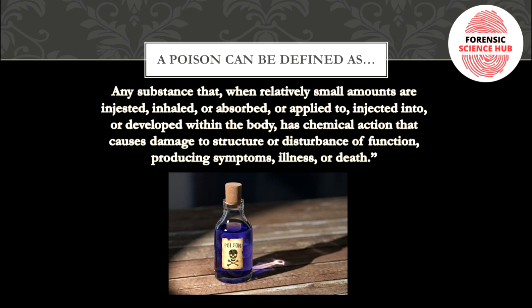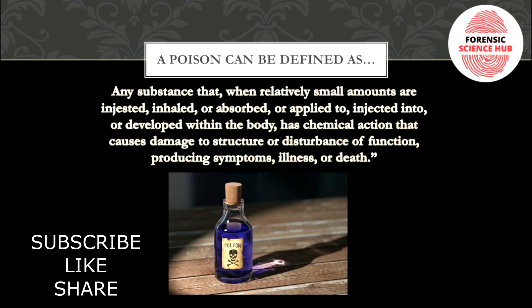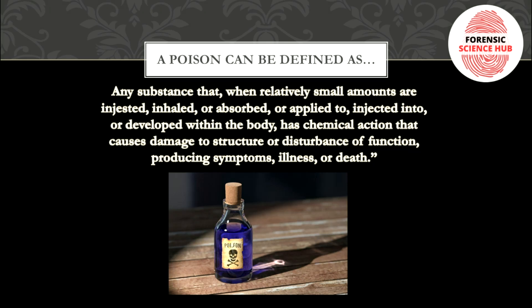So a poison is a substance which, even when taken in small amounts, can be ingested, inhaled, absorbed, applied to the surface, injected inside the body, or developed within the body. It has a chemical action whenever it reaches your body, leading to damage to structure or disturbance of function, which might produce certain symptoms, illness, or even death. That substance is called a poison.